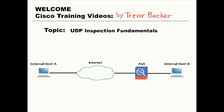Let's first discuss some background on how the ASA operates. The Cisco ASA firewall is a stateful packet inspecting device. This means that the ASA is going to examine and document the state of every connection that attempts to go through it. The ASA utilizes a connection table to keep track of all these connections.